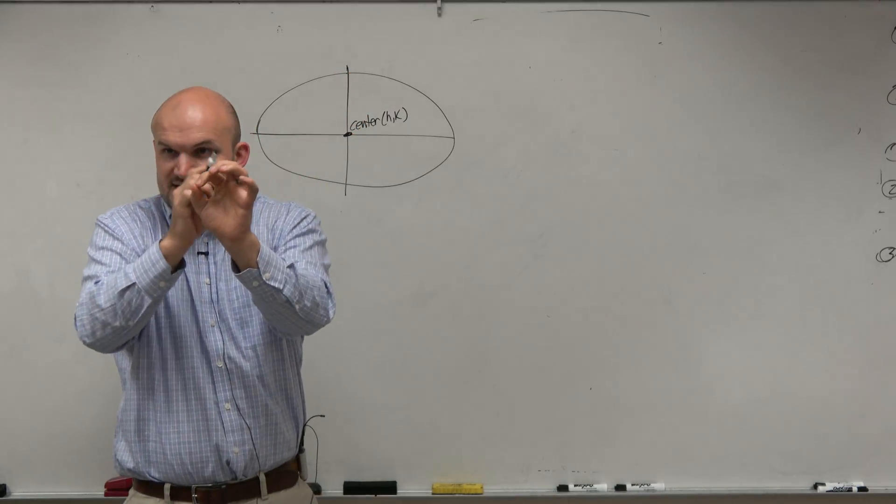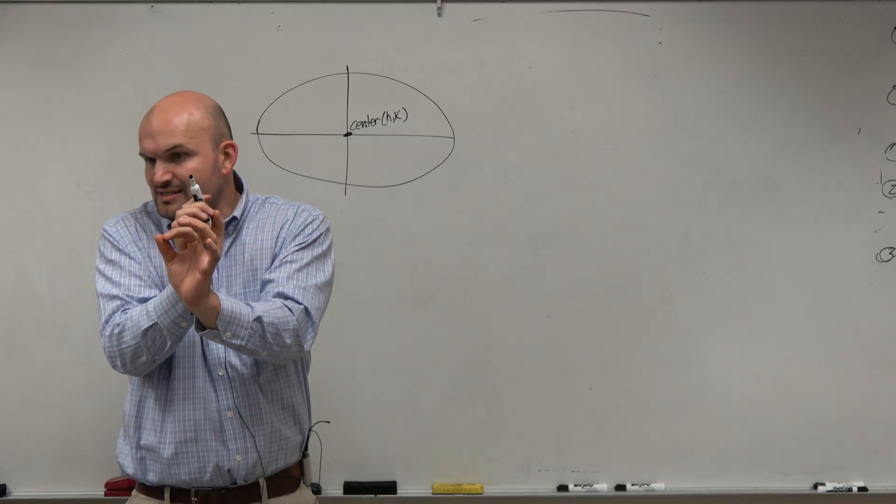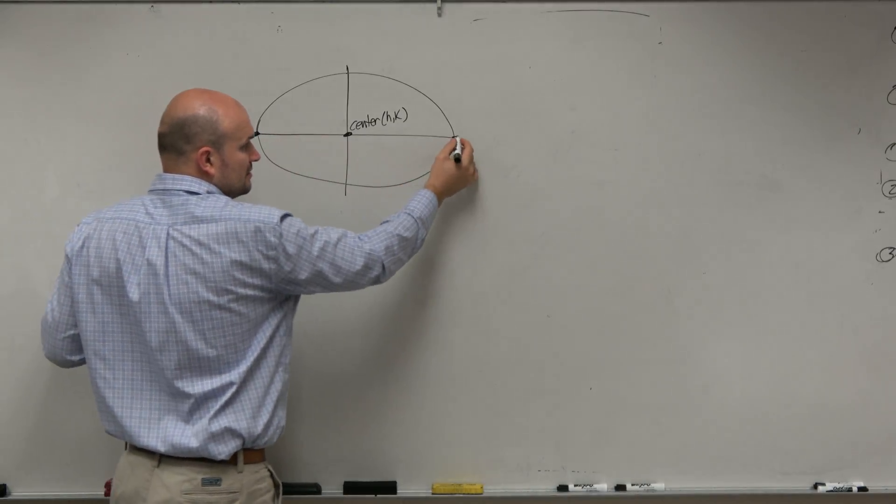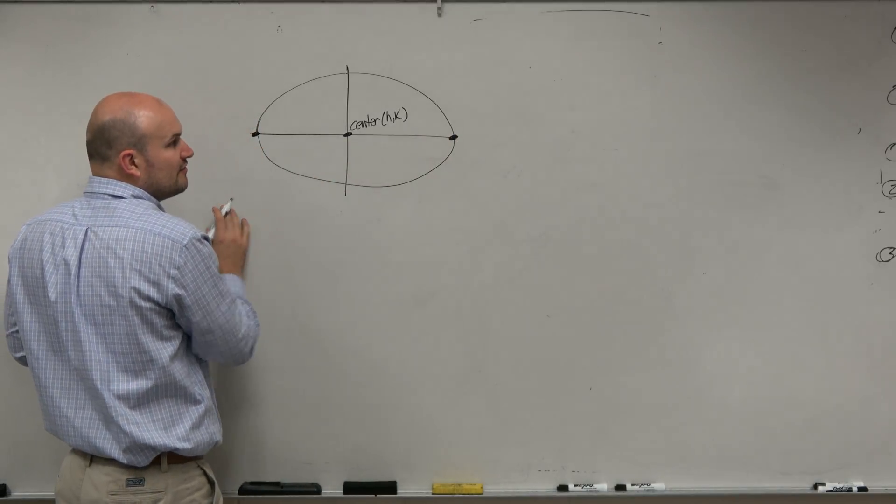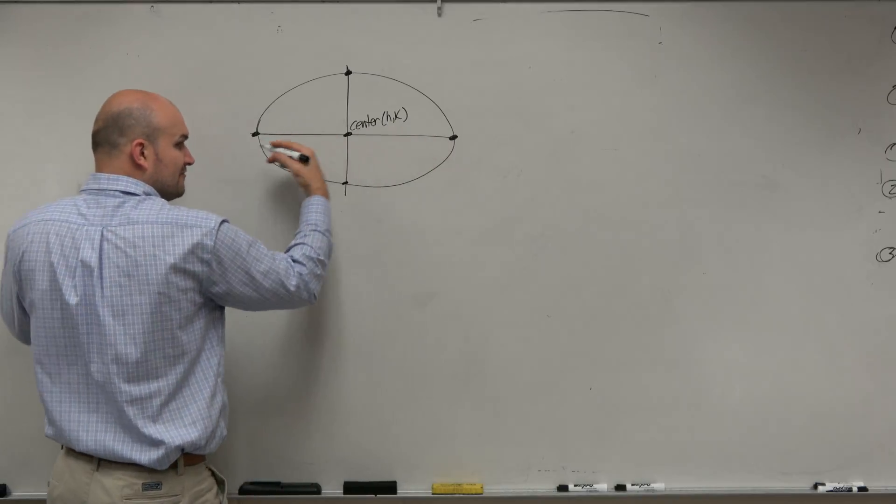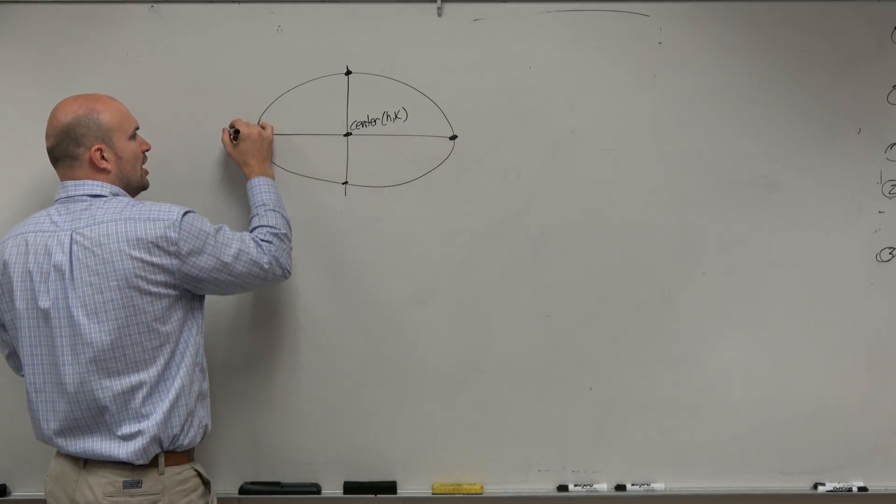The distance from the center to all the points is not equidistant, right? They're different. But we kind of have these long endpoints that are at the long version, and then the shorter version. So the endpoints that were the farthest away from the center were what we call our vertices.